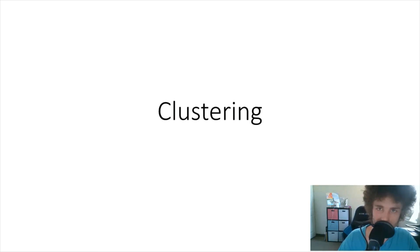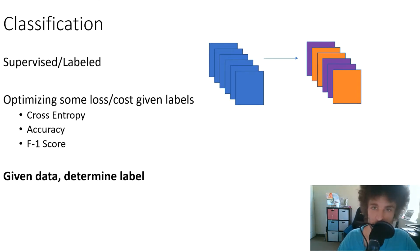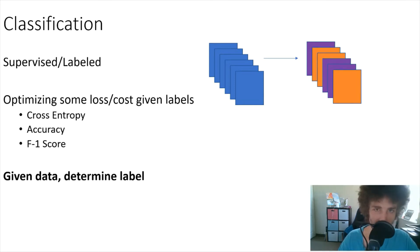Hello everyone, today we're going to be taking a look at clustering. To really understand clustering, I think you should first look at classification to understand the difference between these two things. Classification is the idea that you're given a bunch of data with a label — that's the key — it has a label, meaning it's a supervised method, and given that label you optimize some loss, cost, or accuracy indicative of your performance.